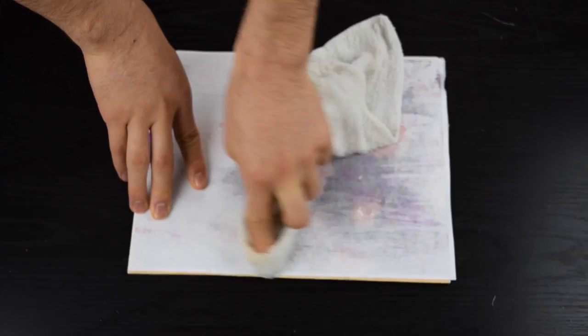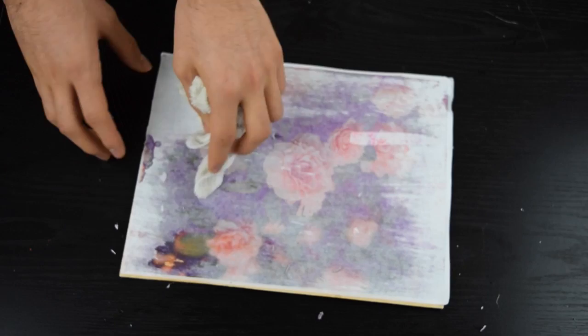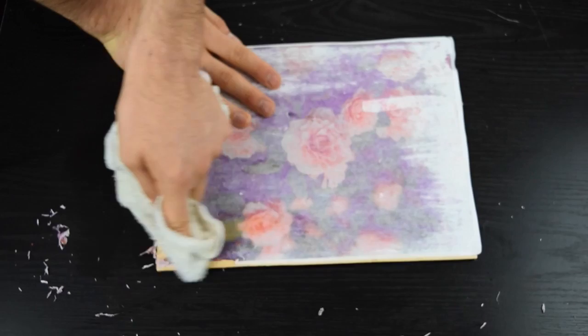Once the paper is all wet, start scrubbing it off with that same towel until your picture is revealed. I have to say this does take some time so just be patient because at the end it's going to end up looking sweet and all that scrubbing you did is all going to pay off.